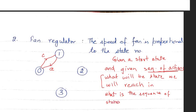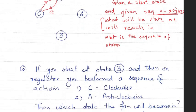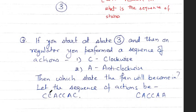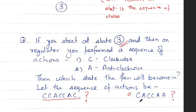We also gave practice questions: given a sequence of actions on the plan regulator example, if you start at state three, where will you reach? What will be your final state? Similarly, if you start at state zero and take a given sequence of actions, where will you reach, and what will be the sequence of states after consuming each symbol?